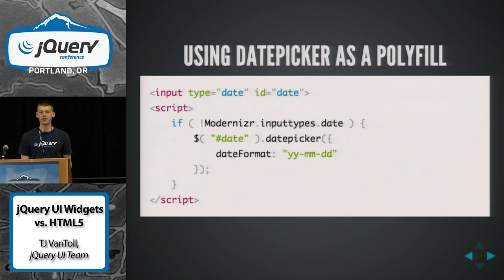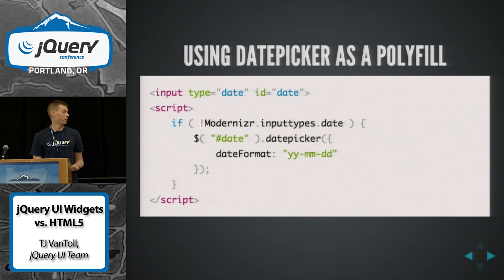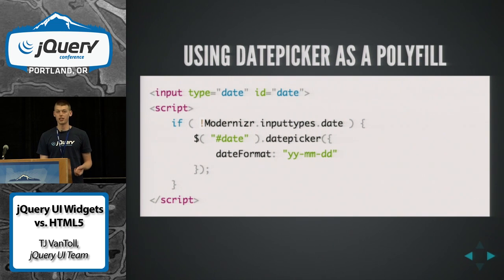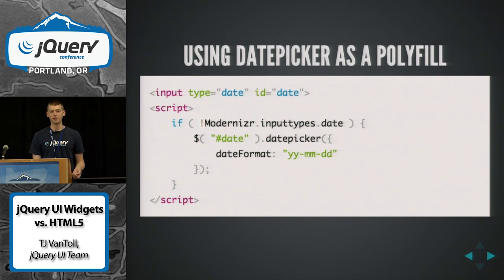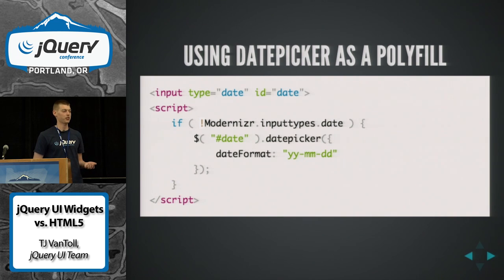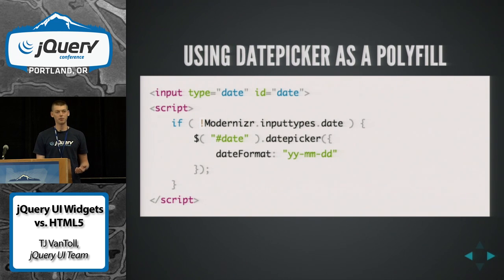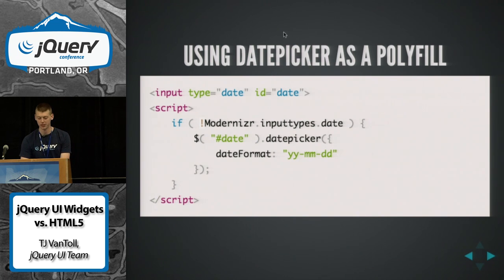UI's date picker does make a good polyfill — you can detect whether support is present, and if it isn't, you can enhance it with a UI date picker. This works really well if you just need a date. You don't need anything special, but you need a date from the user. Then you can be sure that you always get some sort of control — the native picker or UI's when support isn't there.